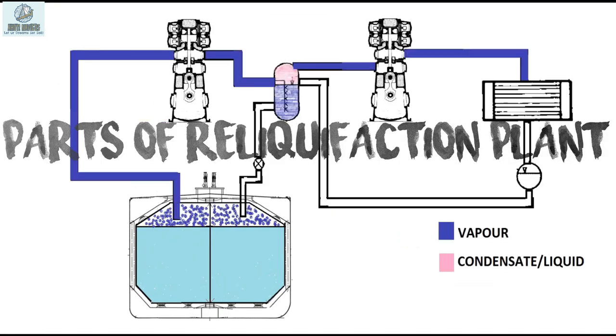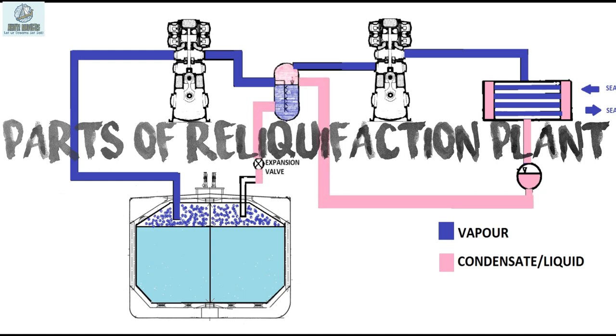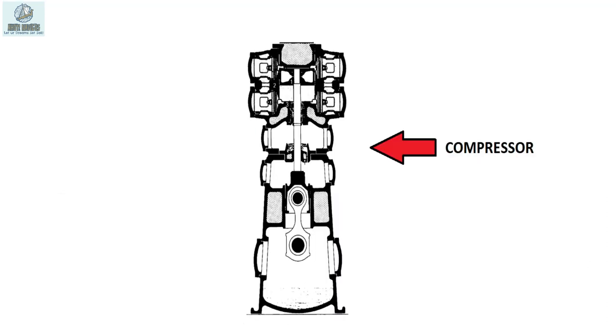Now let us see various parts of reliquefaction plant. Compressor. It is a heart of reliquefaction plant. For LPG ships mostly two types of compressors are found: Reciprocating and screw type. The one shown here is an oil free type reciprocating compressor.